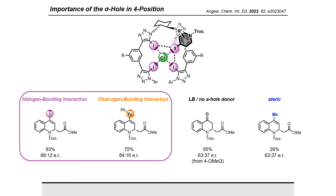This shows us that a sigma hole donor in the four position is important for our system to transfer the chirality more efficiently.